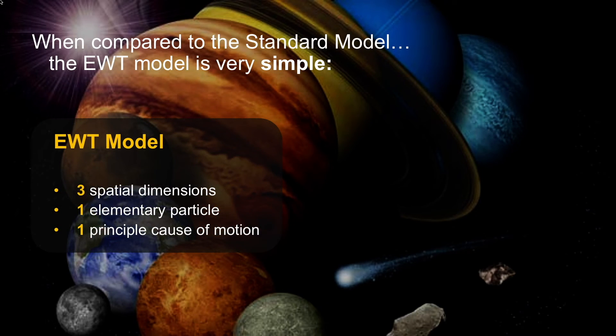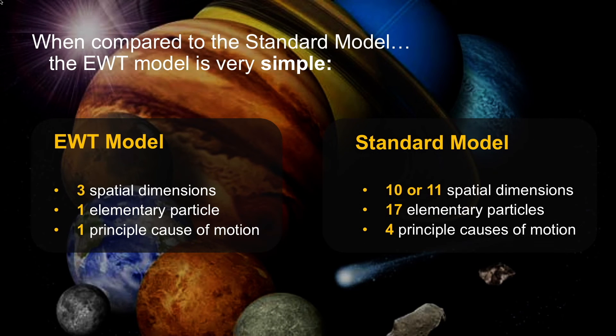To compare this to the standard model, the EWT model is very simple. There's only three spatial dimensions from one elementary particle, possibly the neutrino, one principal cause of motion which is traveling waves and a difference in wave amplitude. Compare that to the standard model: 10 or 11 spatial dimensions, 17 elementary particles, and four principal causes of motion.